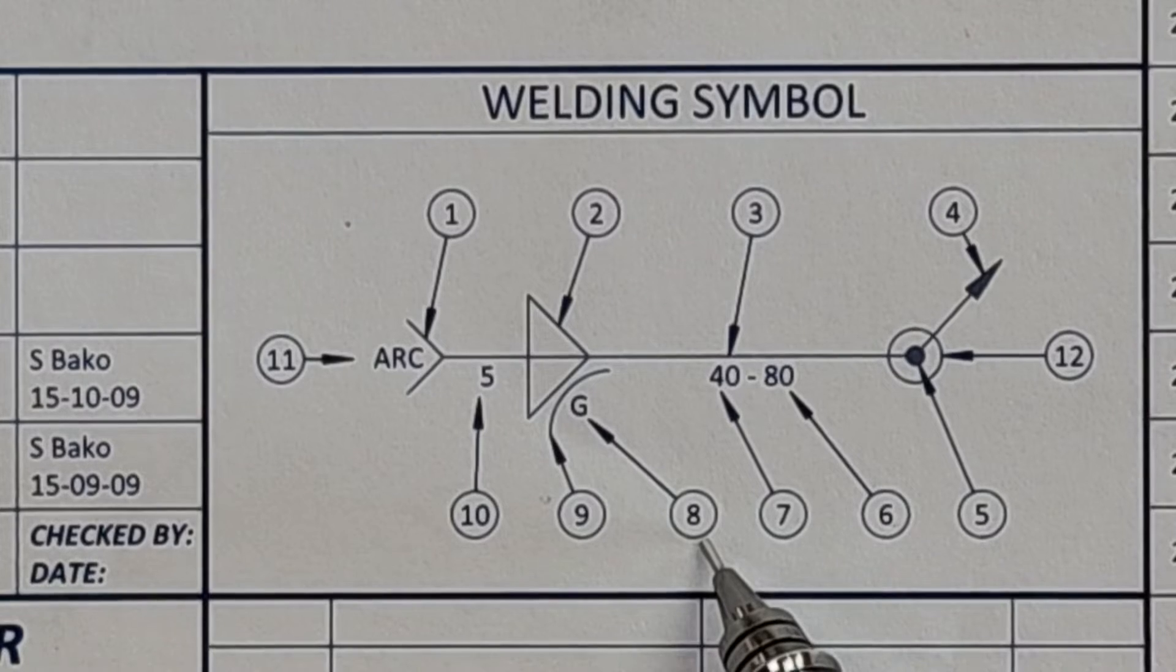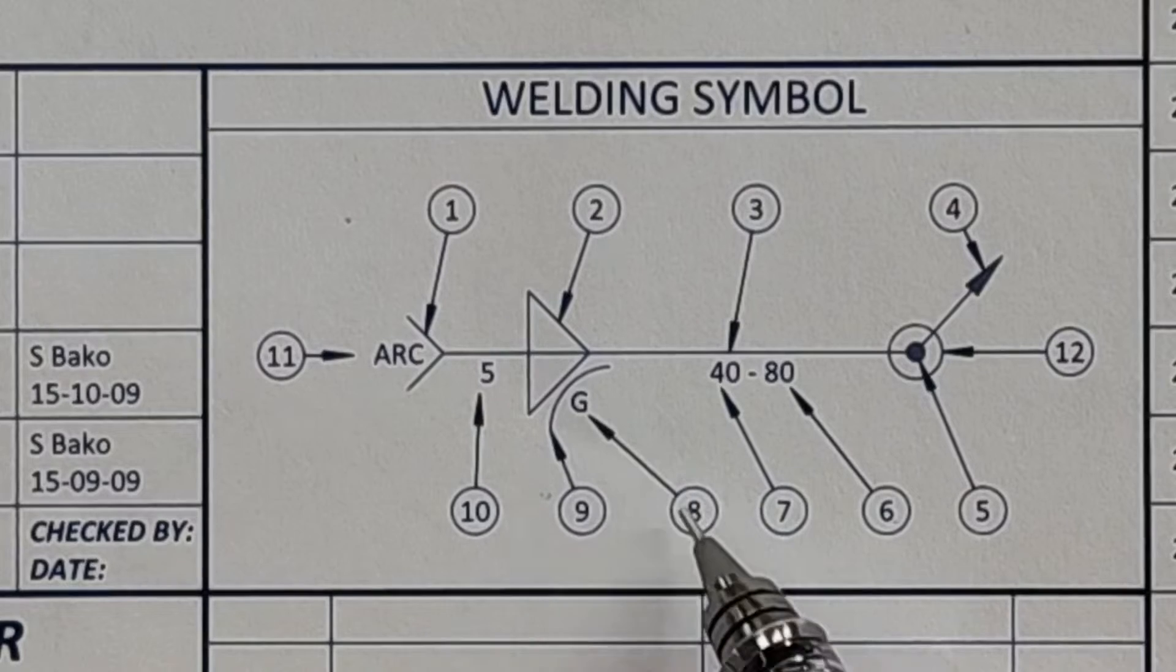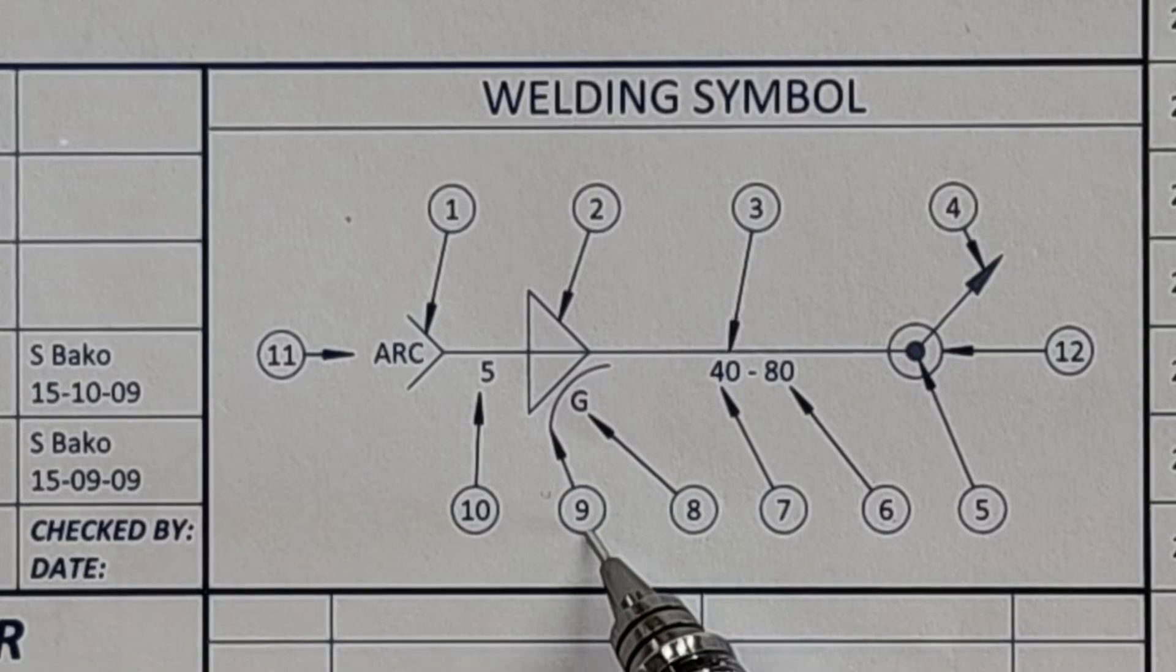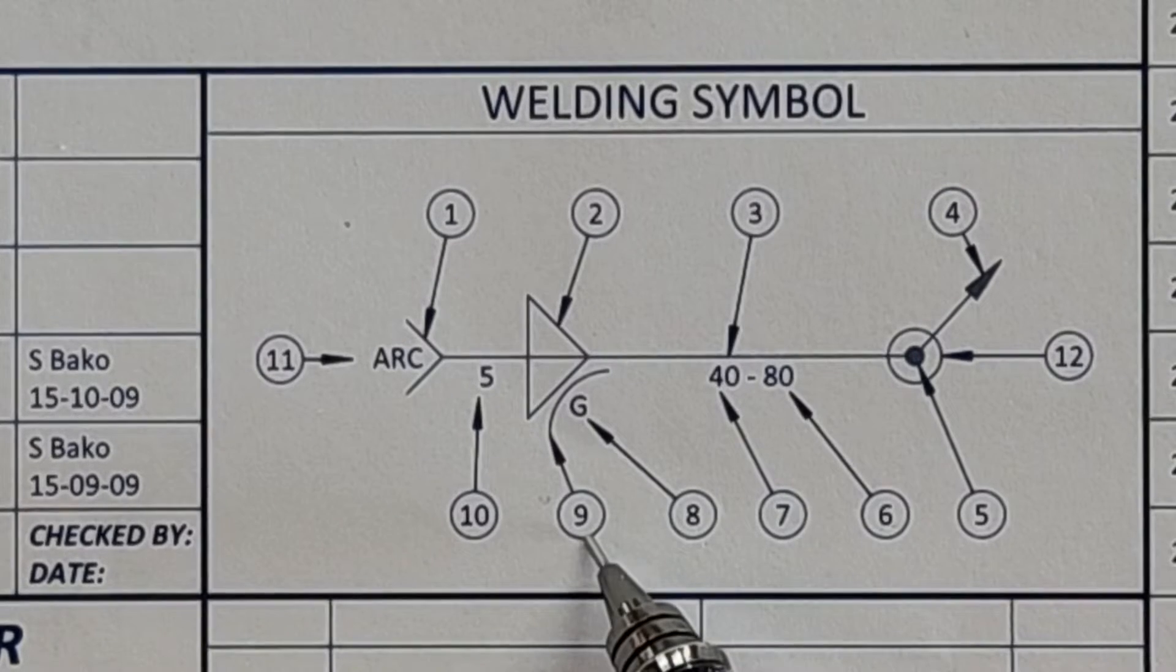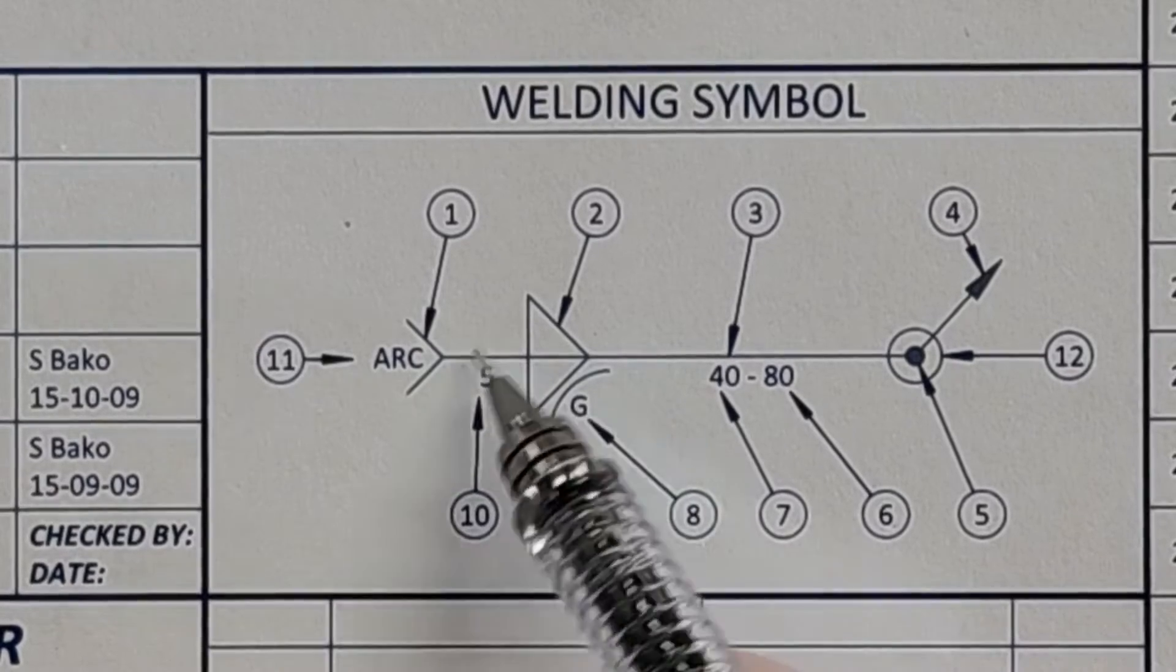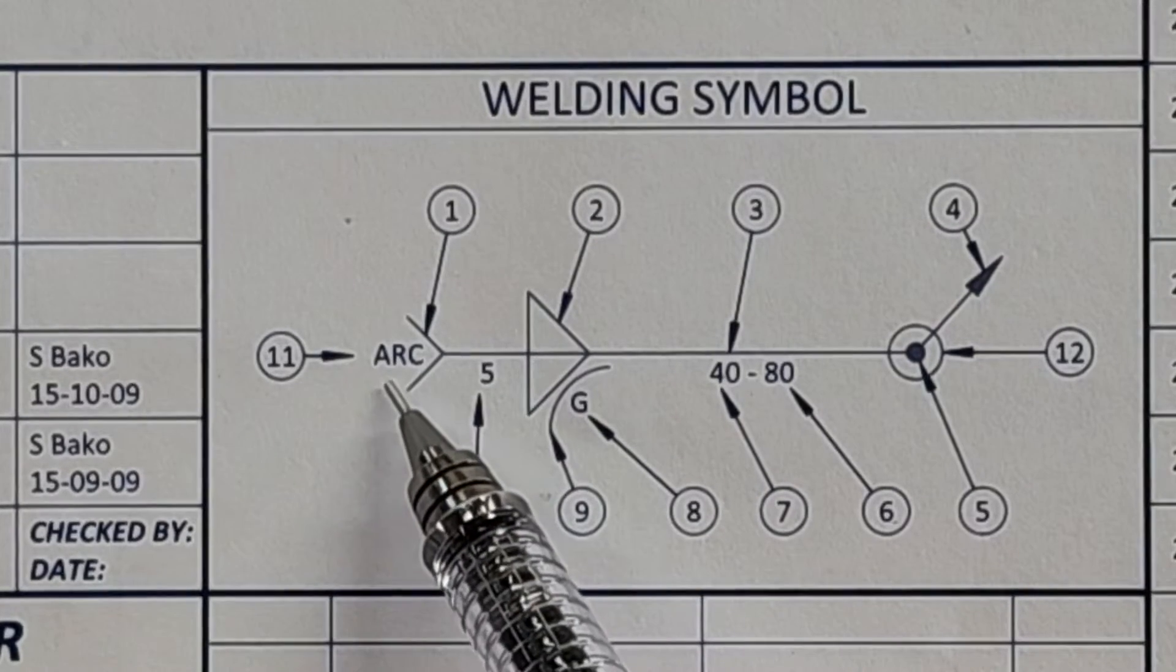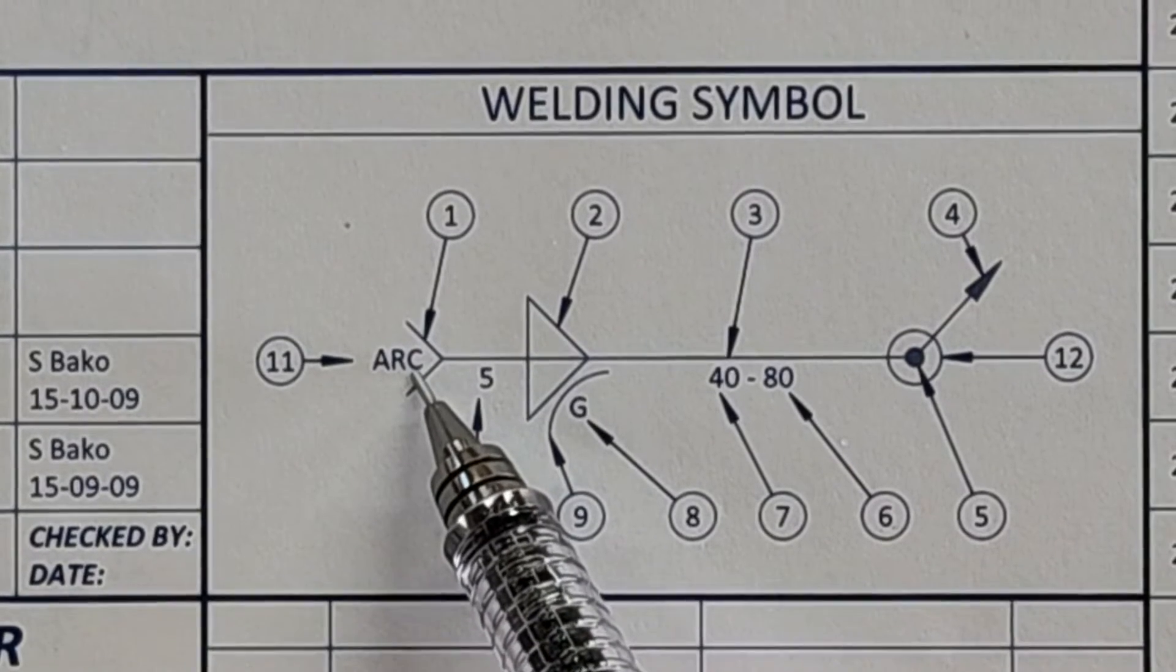Number 8, that is the finishing symbol, in Afrikaans the afwerking symbool. Number 9 is the contour symbol. Number 10 is the size of the weld. In this instance, it's a 5. Number 10 is the size. Number 11 is the welding process.